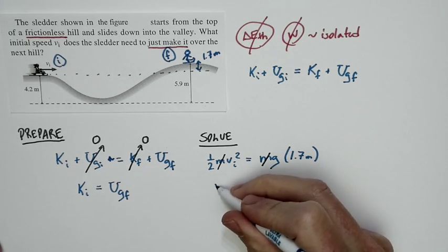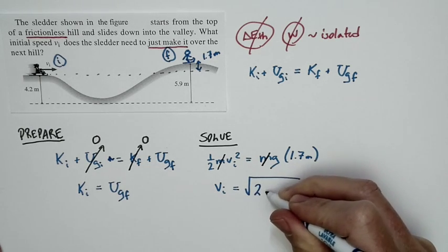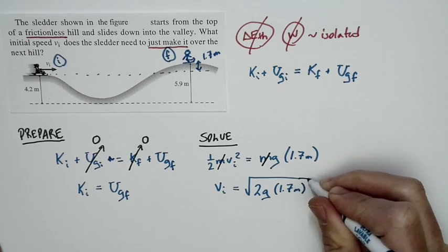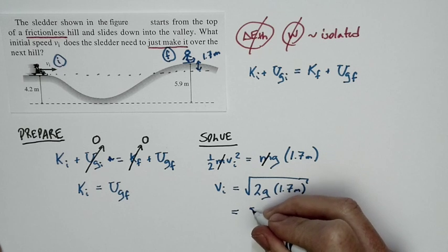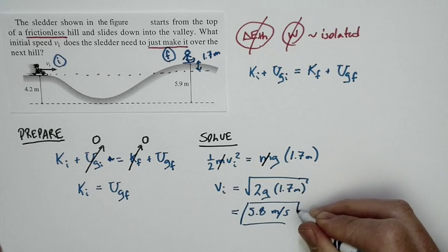Well, now we can just solve and say this. The initial velocity just has to be equal to the square root of 2 times g times 1.7 meters. And if we solve for that, we end up with the speed of 5.8 meters per second to two significant figures.